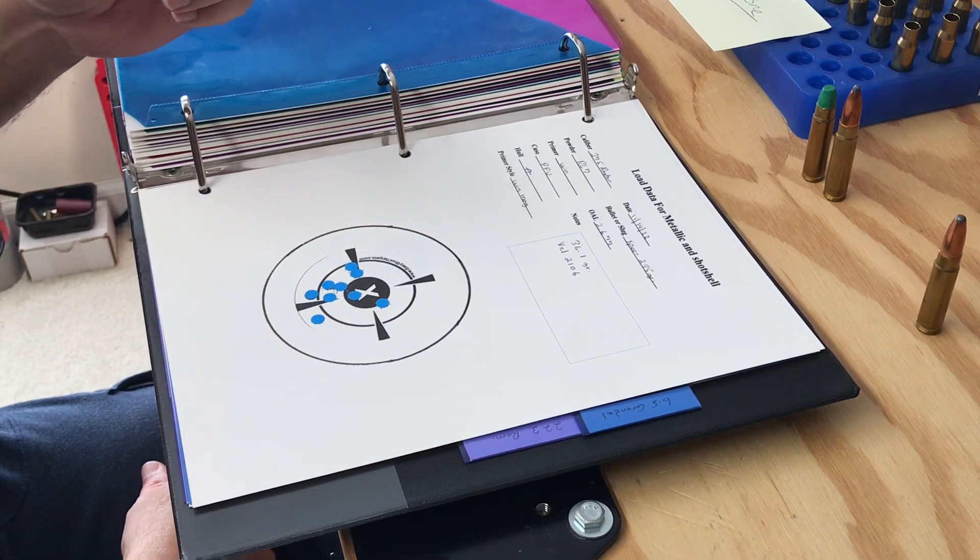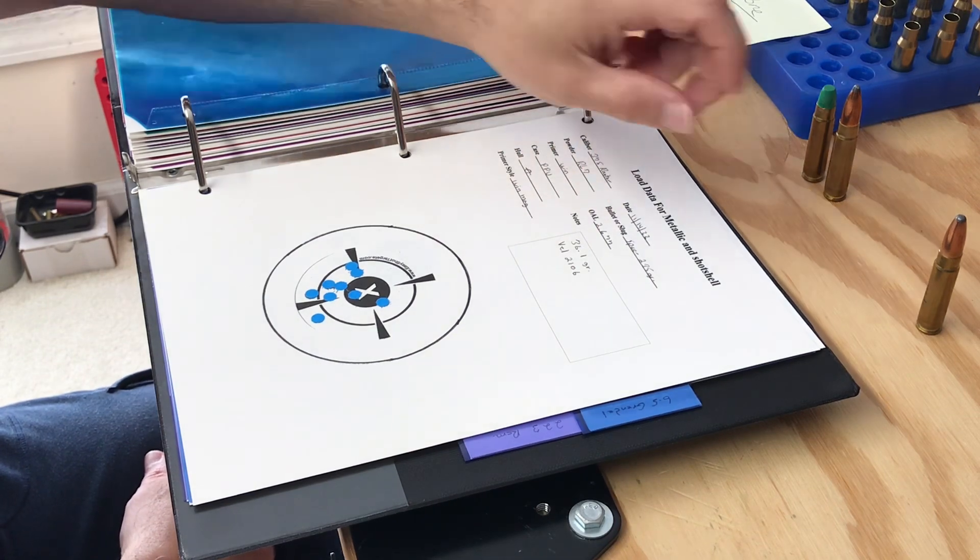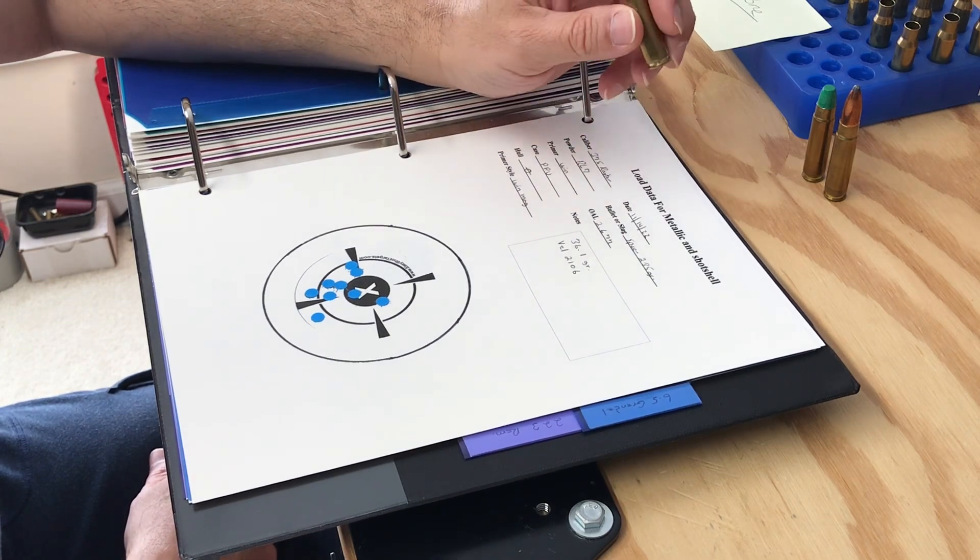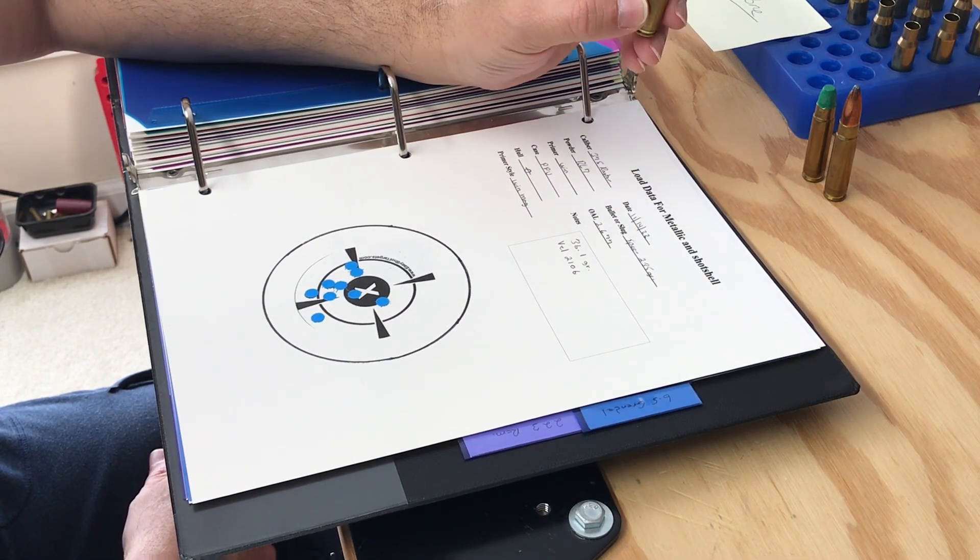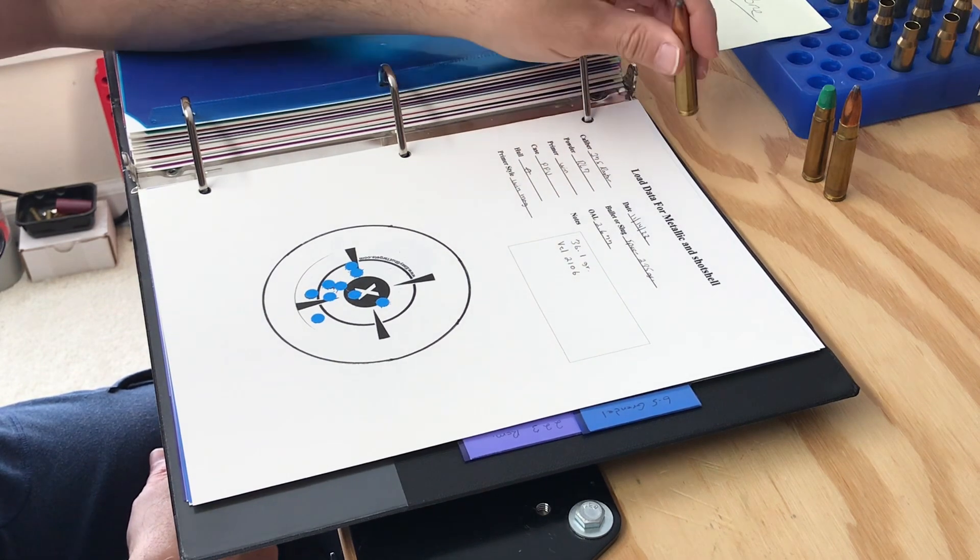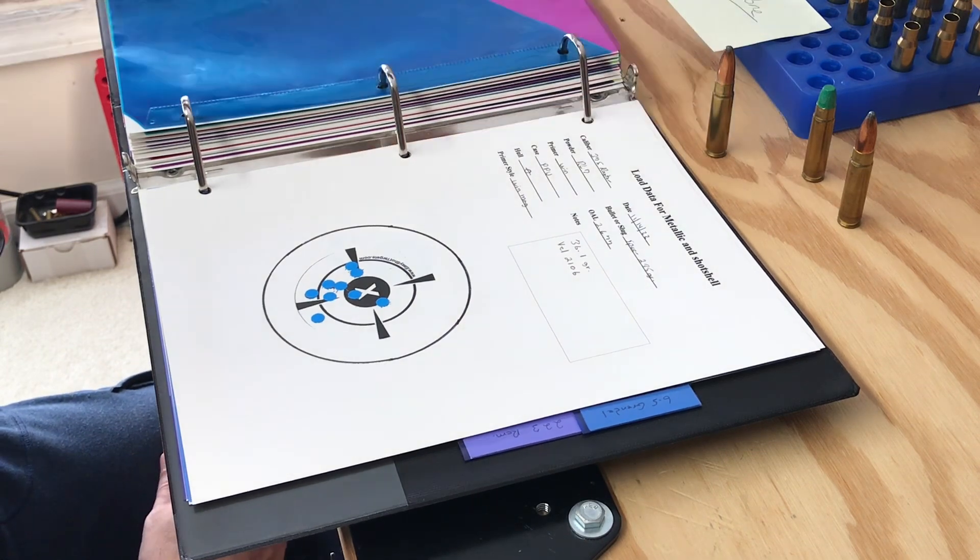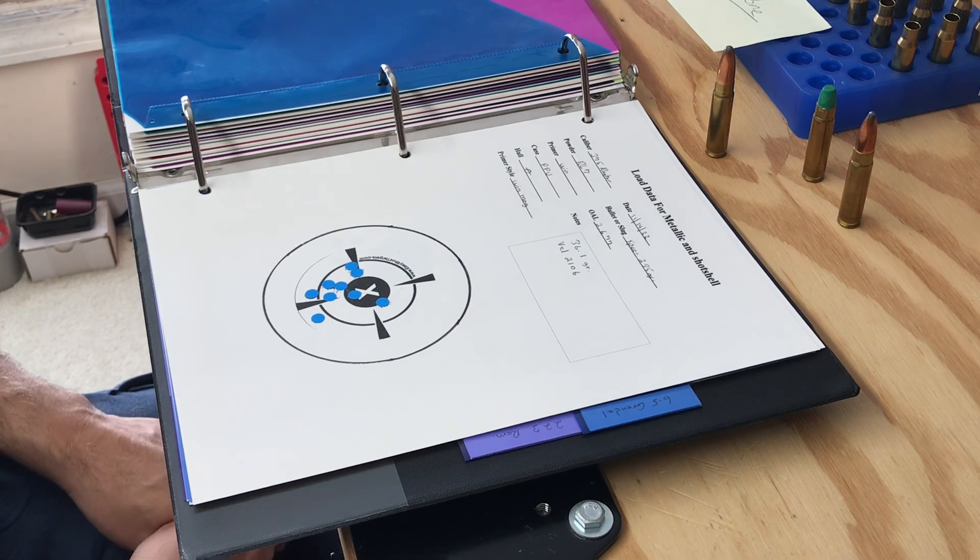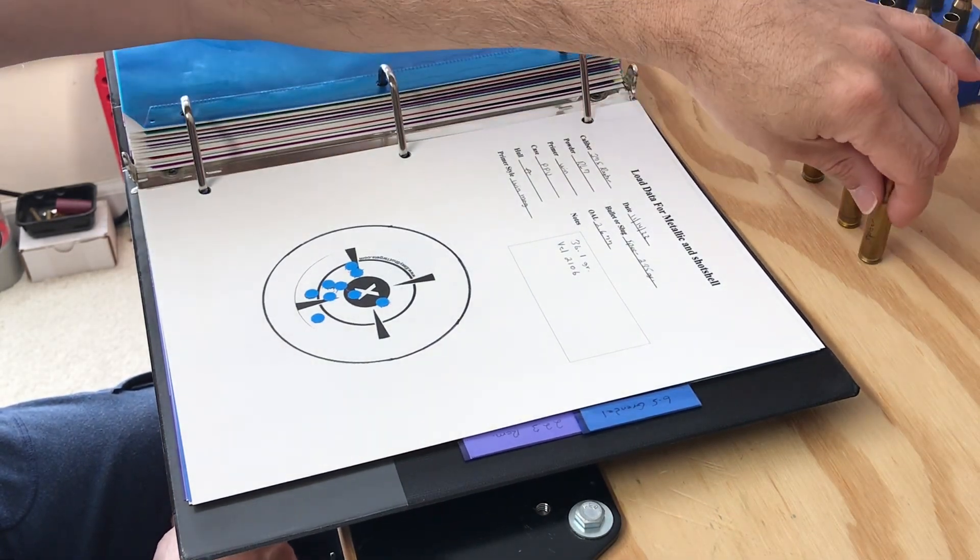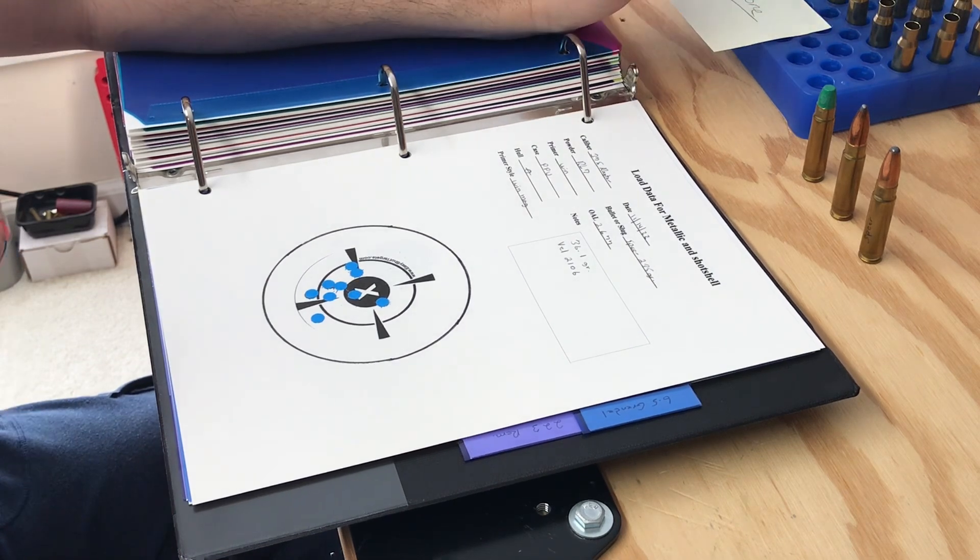This here was Reloader 7 also. Same thing, Winchester magnum. The overall length here—this is a Speer 235 grain—and the overall length on this was 2.677. The load is 36.1 grains. The velocity here was 2106. The velocity with the Sierra was 2116. So it's not too far apart, not bad at all. I do have heavier bullets, but I stopped here on the load development. I'm happy with these three for now. The heaviest bullet I have is 275 grains.